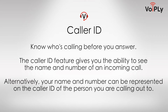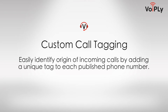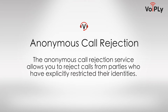Caller ID: Know who's calling before you answer. The Caller ID feature gives you the ability to see the name and number of an incoming call. Alternatively, your name and number can be represented on the caller ID of the person you are calling. Caller Name ID displays the name and phone number of who's calling. Custom Call Tagging lets you easily identify the origin of incoming calls by adding a unique tag to each published phone number. Anonymous Call Rejection allows you to reject calls from parties who have explicitly restricted their identities.